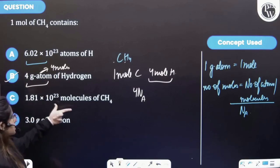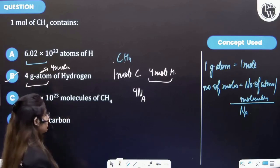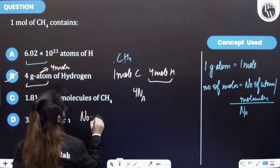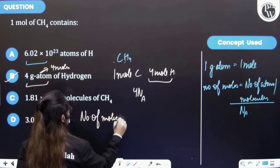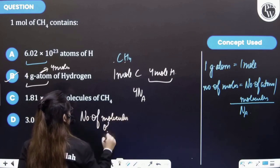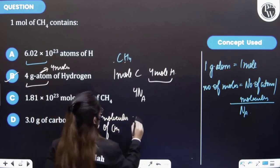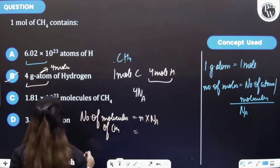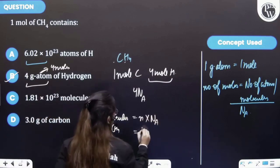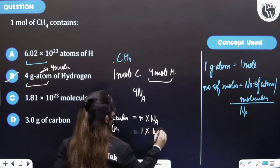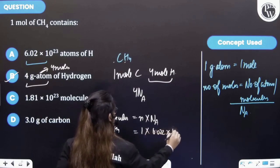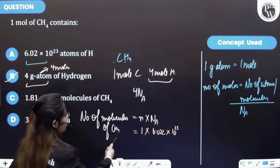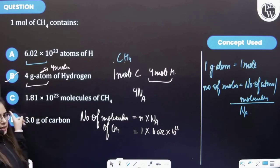Further, this number of molecules of methane - for the C option, number of molecules of methane will be number of moles into Na. And so it will be equal to one times Na, this is number of molecules for CH4. So this is incorrect statement.